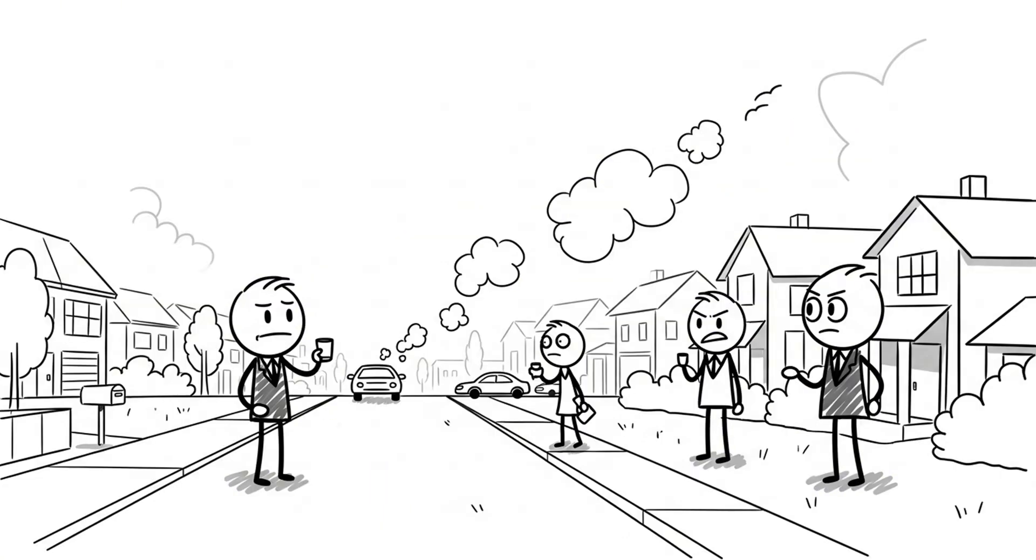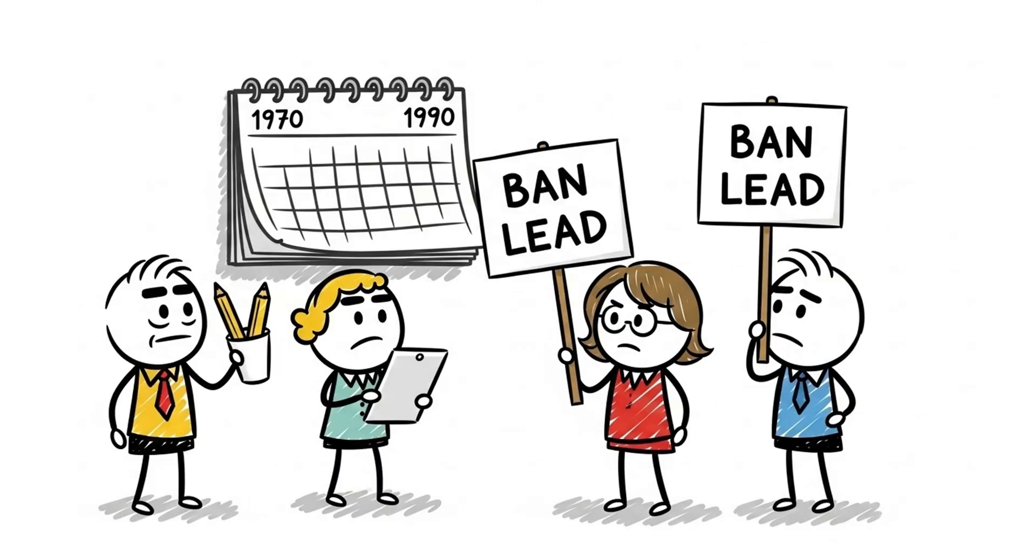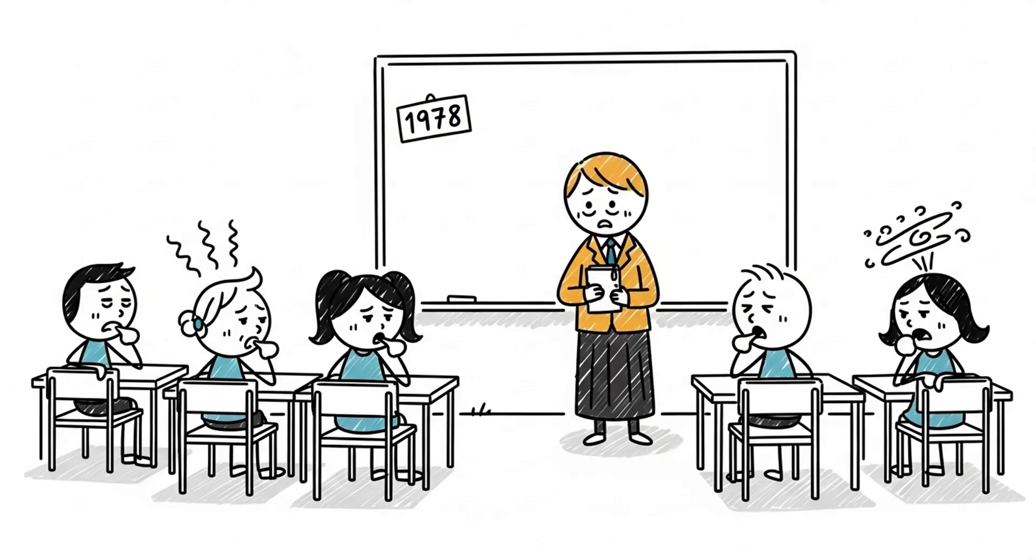For decades, children worldwide breathed in tiny particles of lead from car exhaust. Lead exposure was linked to lower IQ, attention problems, and long-term harm. By the 1970s, scientists began to fight back. But it wasn't until the 1990s that leaded gasoline was banned in most countries. By then, it had poisoned an entire generation.